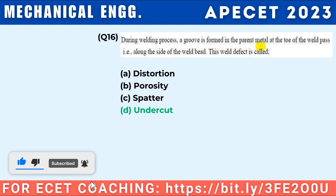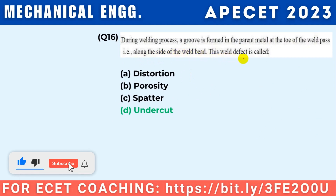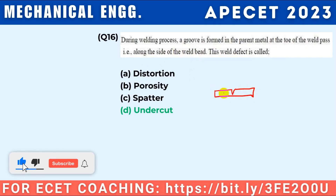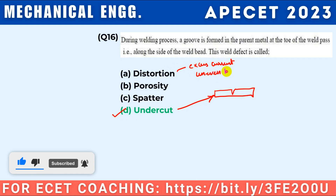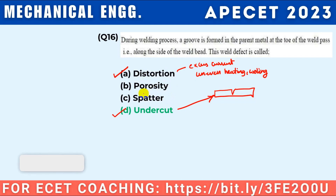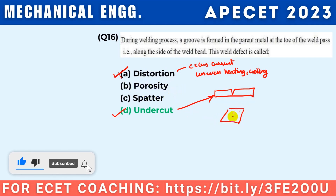During a welding process, a groove is formed in the parent metal at the toe of the weld bead — this welding defect is called undercut. Distortion is due to uneven heating and cooling or excess current. Porosity is entrapment of atmospheric gases in the weld pool. Spatter is caused by excess heat input or high welding current.